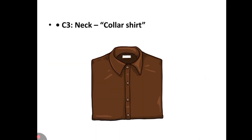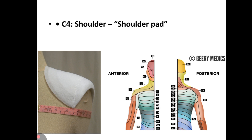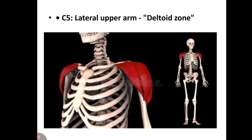C3 dermatome is the neck area — remember it with the collar shirt area. C4 — remember this with the shoulder pad area. C5 is the lateral upper arm area, that is the deltoid zone.